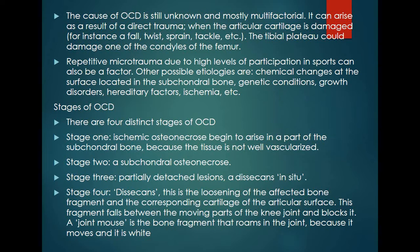Coming to the stages, this condition can be divided into four distinct stages. Stage 1: due to ischemia, osteonecrosis begins in a part of the bone where tissue is not well vascularized. Stage 2: osteonecrosis is formed fully in the subchondral bone. Stage 3: after osteonecrosis, there is starting of defragmentation or partial detachment of the lesions — the sequestrum in situ.